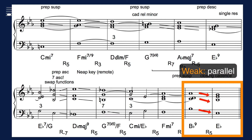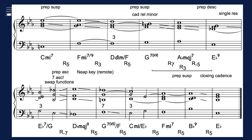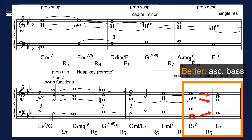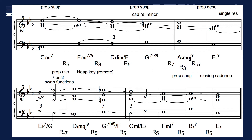Although we have a strong closing cadence, the voice leading is poor, with parallel motion in 3 parts. This could have easily been prevented by improving the voice leading in the bass part, putting the root B flat in the lower octave.